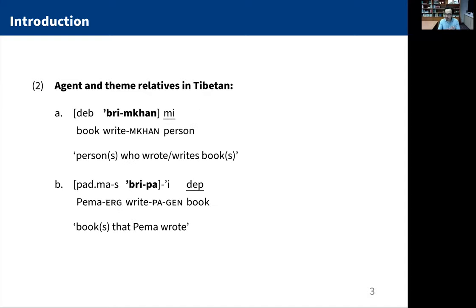On the other hand, in Tibetan, this is a head-final, strongly verb-final language with pre-nominal relative clauses — you're looking at Tagalog in the mirror. Again, you have verbal morphology telling you which argument you're relativizing over. For an agent relative in 2a, you have the verb with the suffix ken — that's 'the person who wrote books.' And then in 2b, books that Pema wrote — you get a different form of the verb.